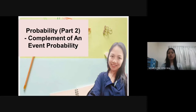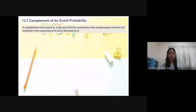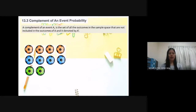In video part one we learned what probability is. Now in probability part two we are going to learn the complement of an event. The complement of an event A is the set of all the outcomes in the sample space that are not included in the outcomes of A, and it is denoted by A prime.